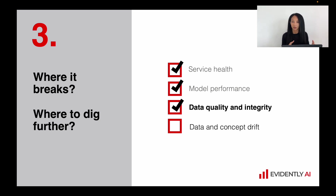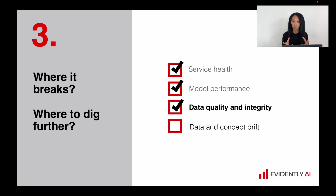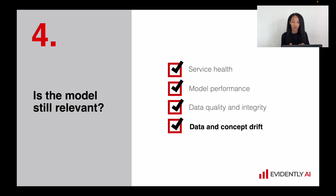What are those metrics? We can calculate quite a lot of things — for example, the share or amount of missing values. We can check column types and compare them with the types we expect for specific columns. We can check the value range for each column. There are many things we can calculate to catch bugs along the way.